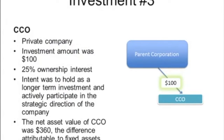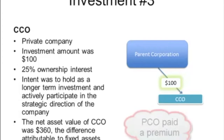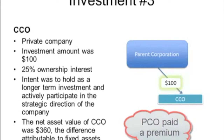PECO's third investment was SECO, a private company in startup. PECO invested $100,000 and was granted a 25% ownership stake in the company. Bob thinks this will be a longer-term investment. Given the size of his ownership stake, Bob expects that he will be actively participating in influencing the strategic, operating, investing, and financing direction of the company. At the date of acquisition, the net asset value of SECO was $360,000.